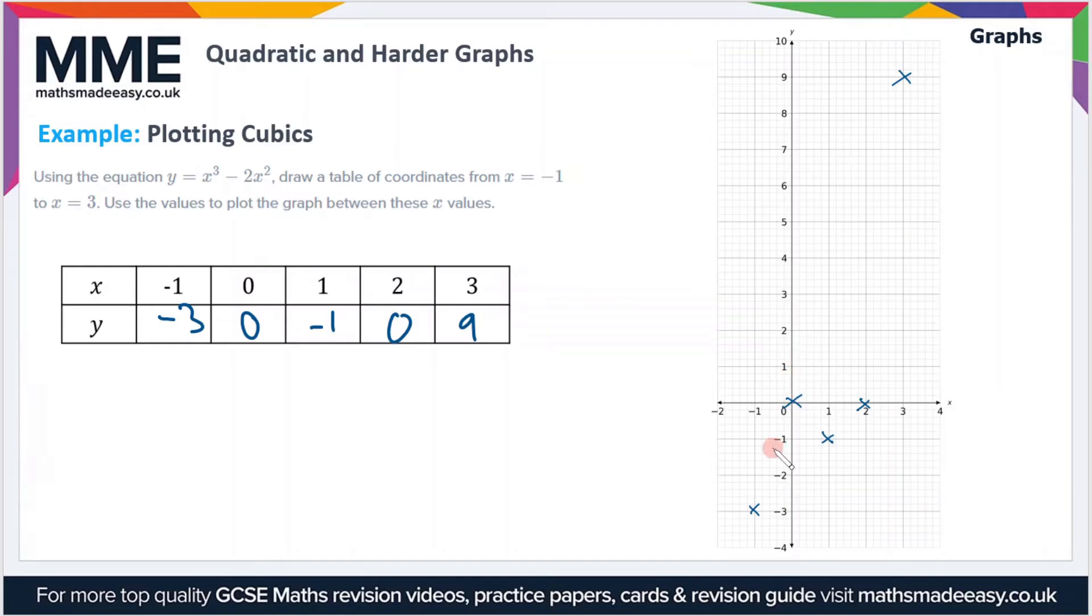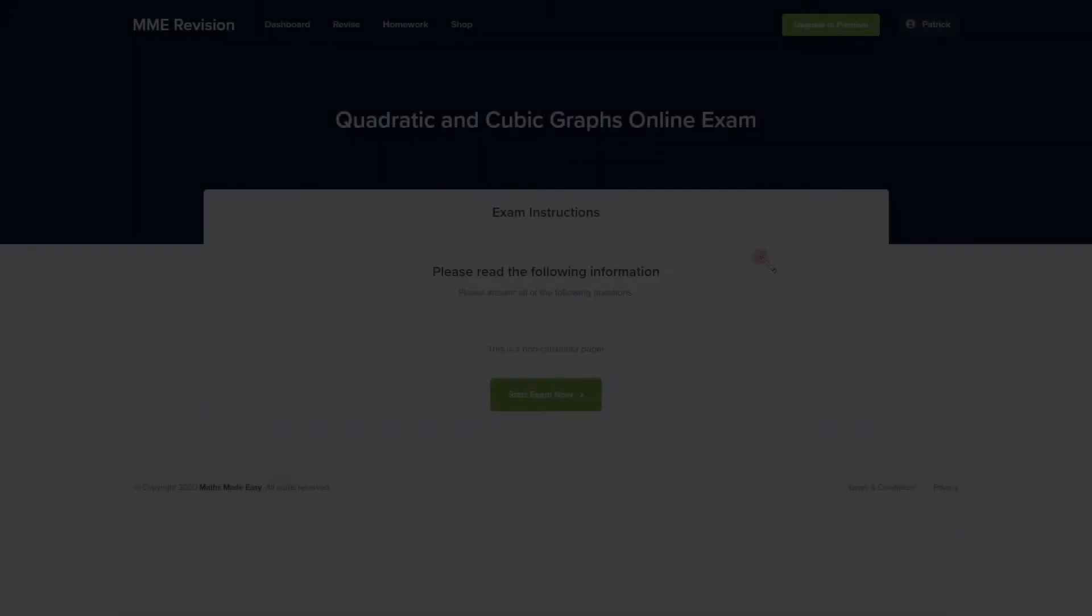The final thing to do is just to join all of these points up with a smooth curve. It should hopefully look very neat and should look something like this. We have two turning points here, a maximum and a minimum, and the curve is smooth. I've not used a ruler, you just have to draw it freehand and make it as neat as possible.